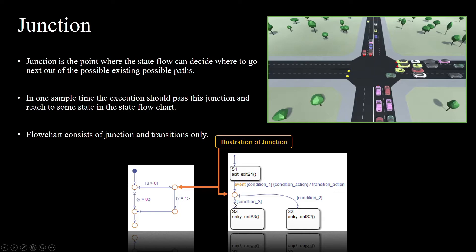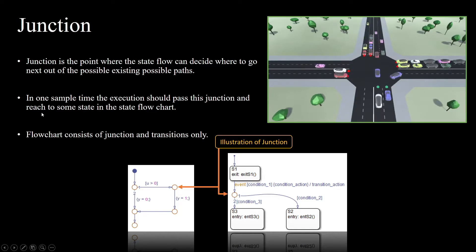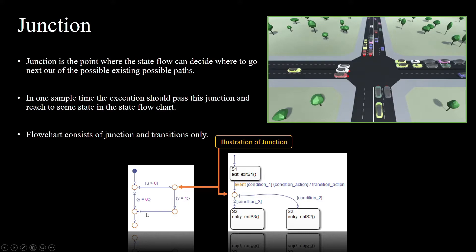The second principle for junctions is that in one sample time it executes and passes the junction and reaches the exit point. This also happens with the flowchart. When we start at a junction, in one sample time only we need to reach the end of the junction. This is how the logic is implemented in flowchart, because in flowchart we have no place to stay — we need to start from a point and end at some point.